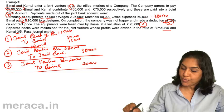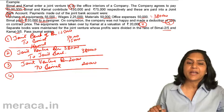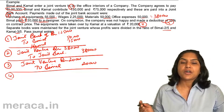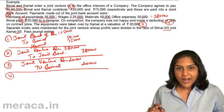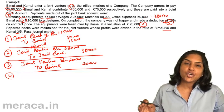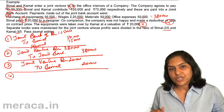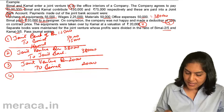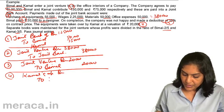Entry four: the equipments are taken over by Kamal at a valuation of 20,000. If a co-venturer takes over the equipment, the entry would be co-venturer's account debit, since the co-venturer is receiving something, and joint venture account is credited — since when equipments were purchased, joint venture account was debited. So here, Kamal's account debit to joint venture, 20,000.